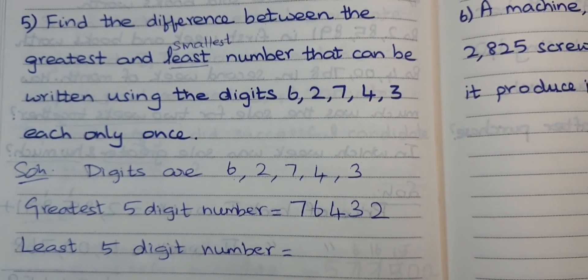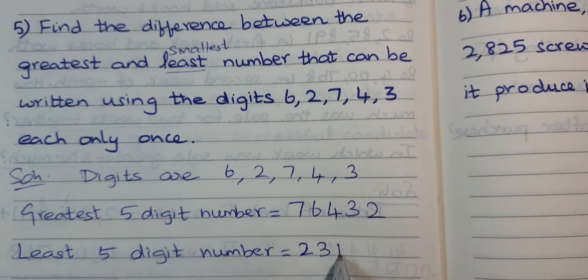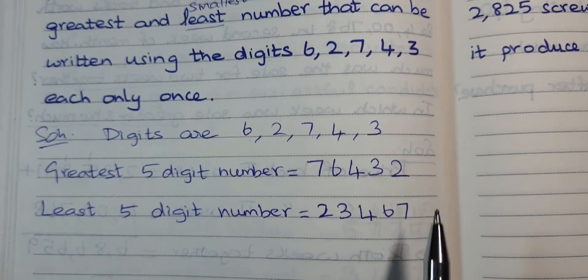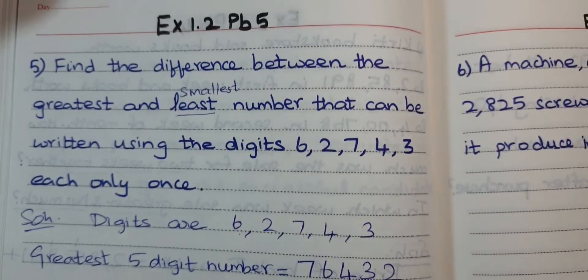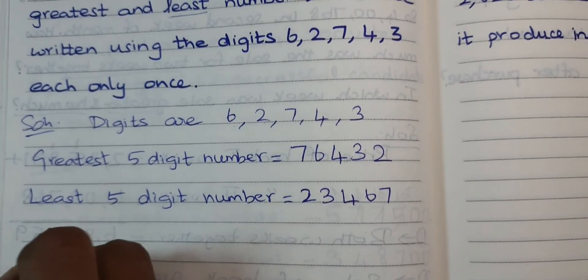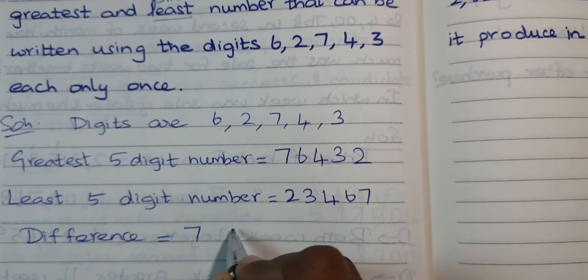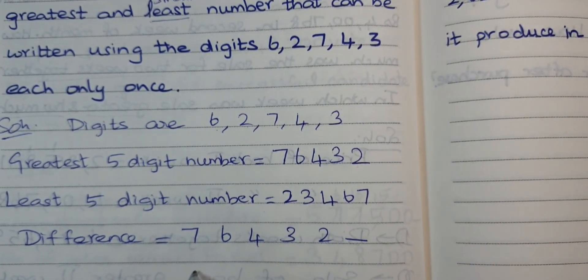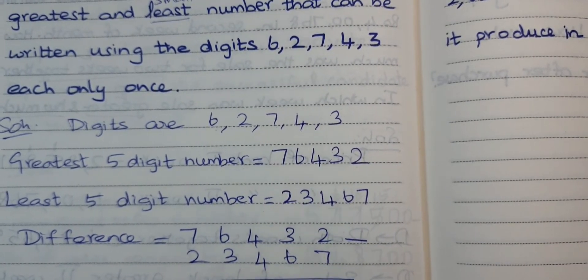Next, the least — smallest — 5-digit number. To find it, you start from the smaller digit to the bigger digit. The smallest digit here is 2, so reversing the order gives: 2, 3, 4, 6, 7. Now I have the two sets of numbers. The question asks to find the difference, which means subtraction.